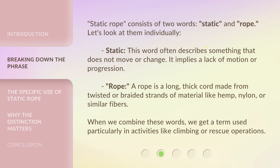Static rope consists of two words: static and rope. Let's look at them individually. Static — this word often describes something that does not move or change. It implies a lack of motion or progression. Rope — a rope is a long, thick cord made from twisted or braided strands of material like hemp, nylon, or similar fibers. When we combine these words, we get a term used particularly in activities like climbing or rescue operations.